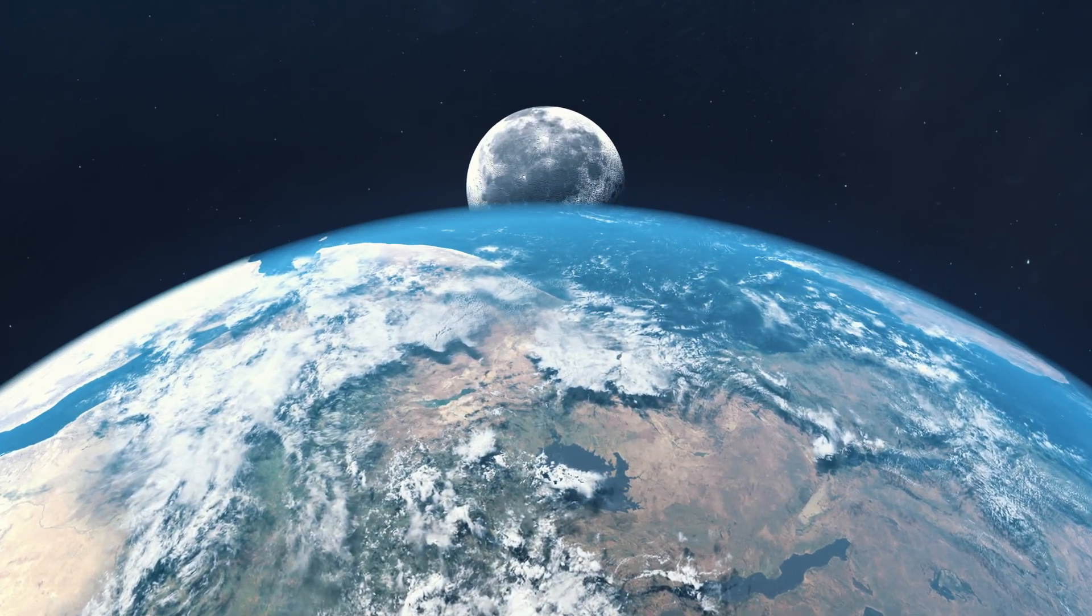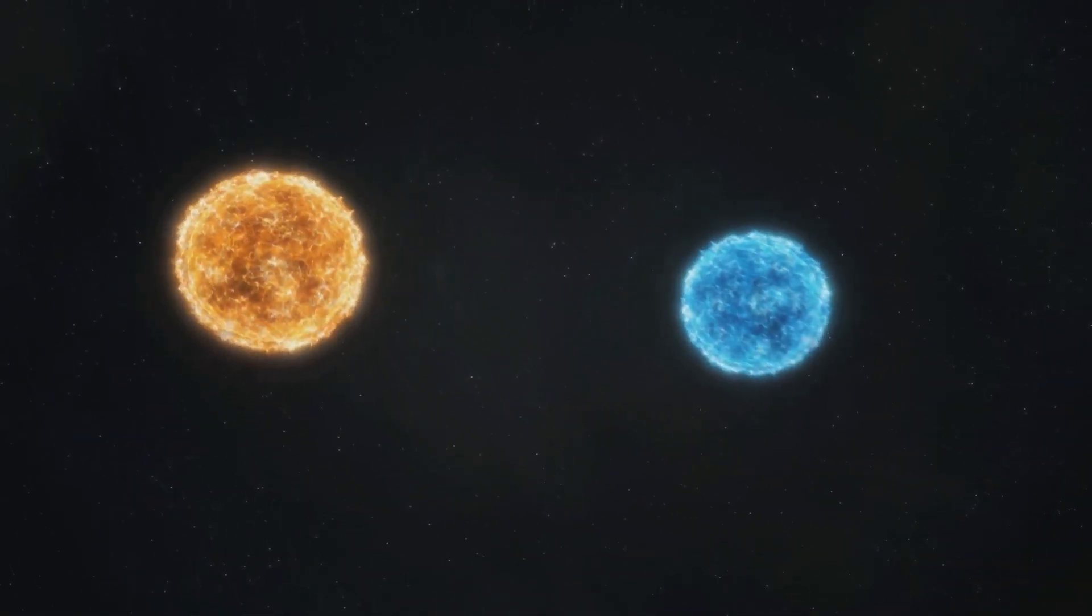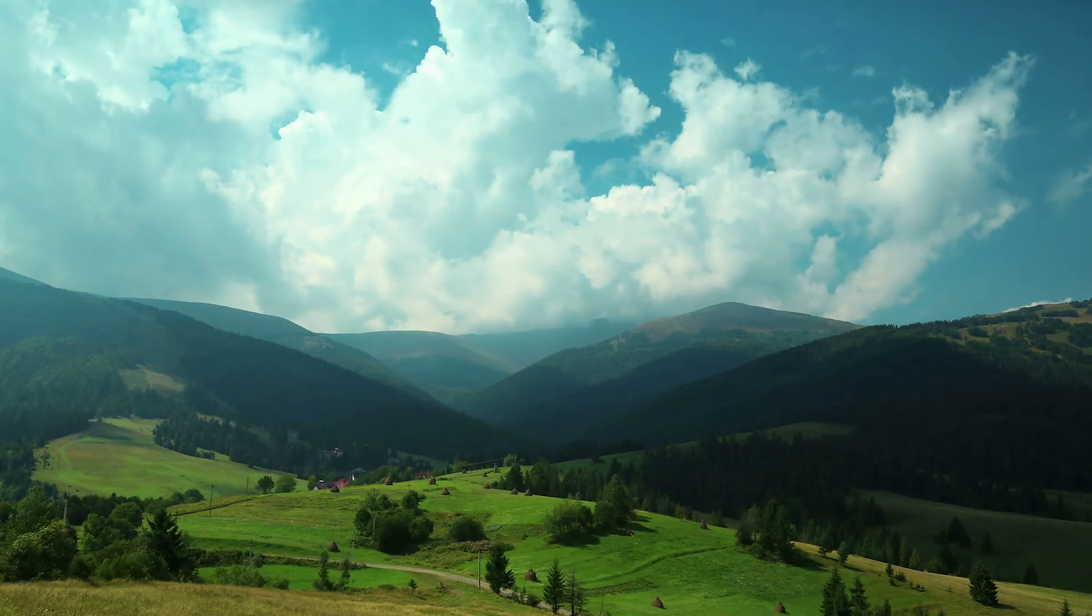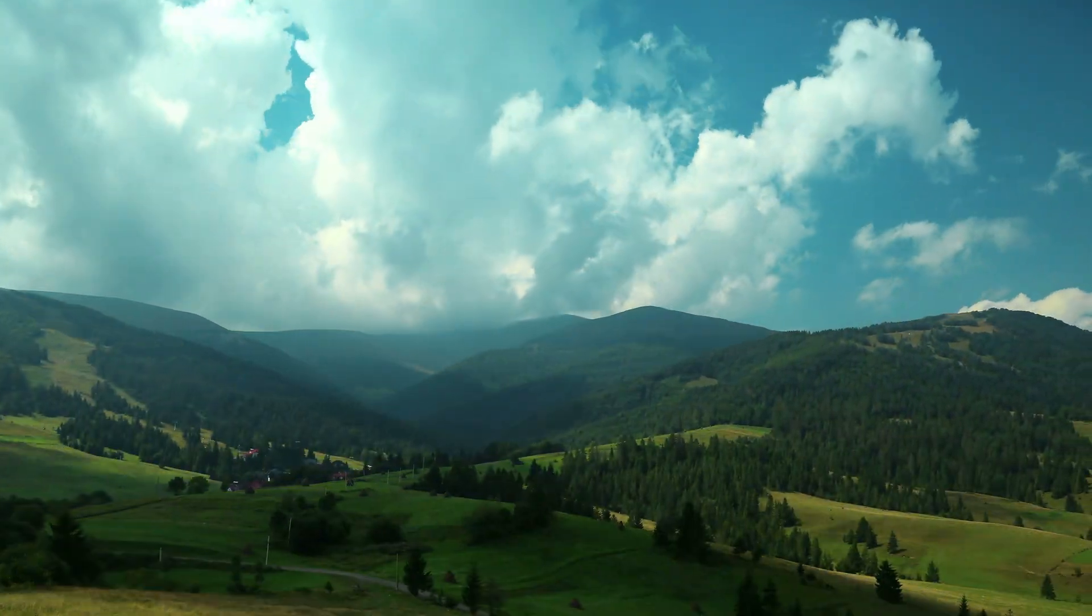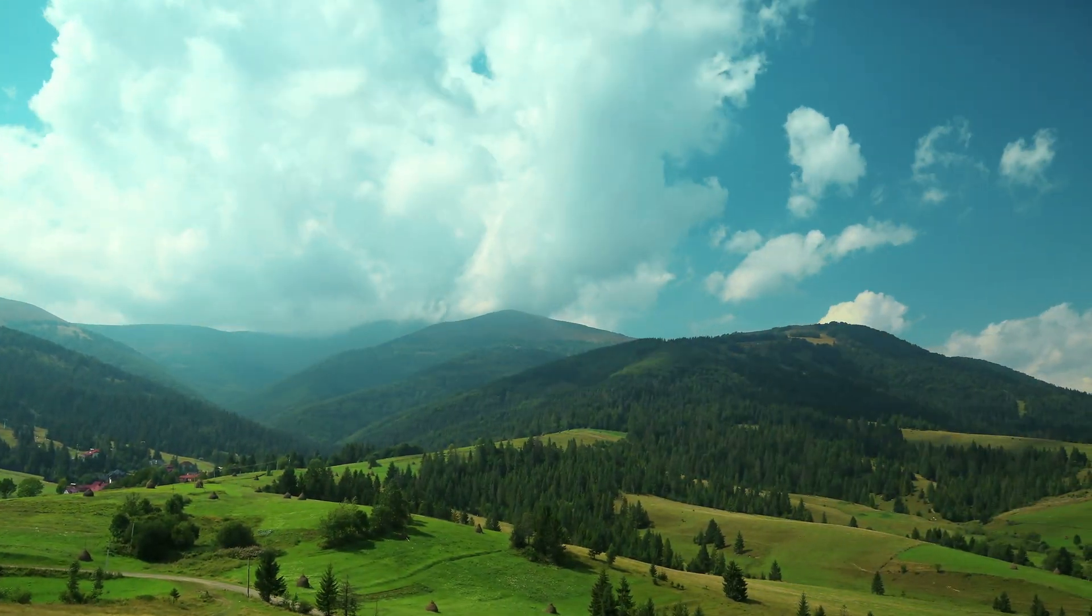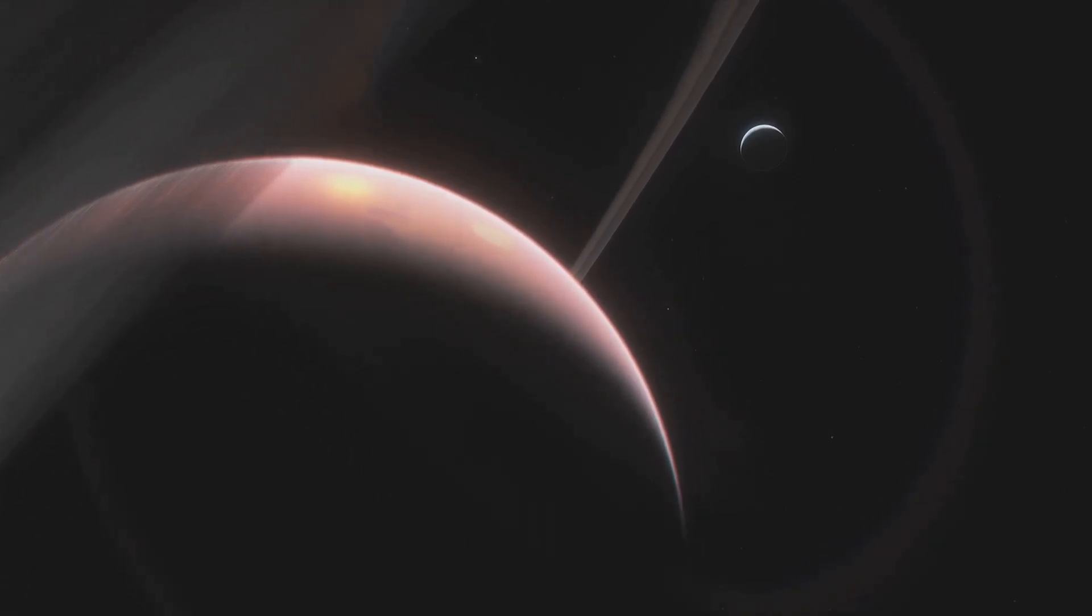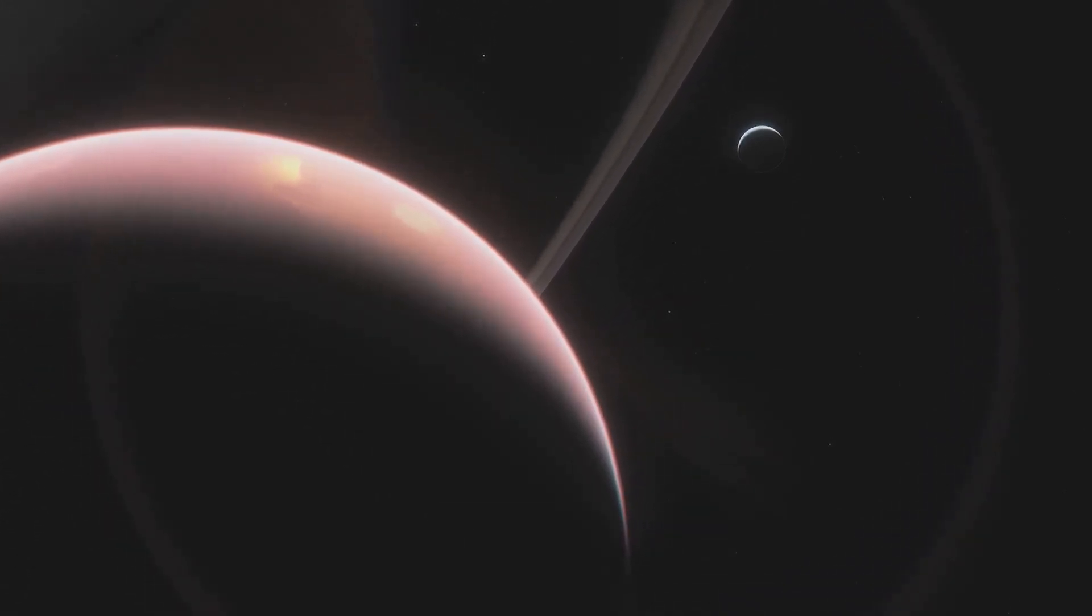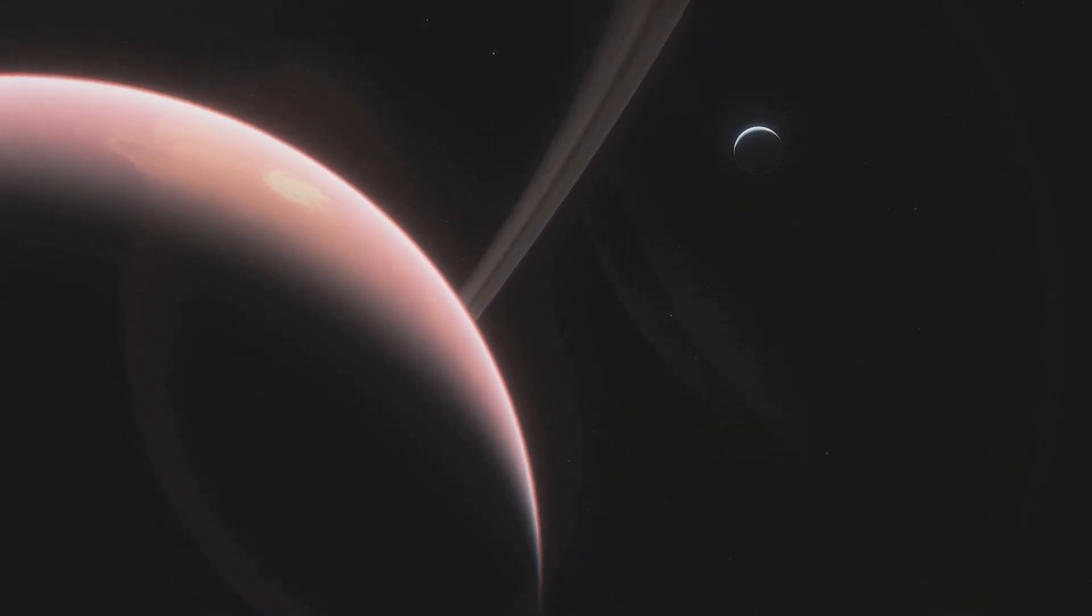We also need to consider the exoplanet's host star, Alpha Centauri. It's a binary star system, meaning it has two stars. This could potentially have a significant effect on the exoplanet's climate and seasons, making them drastically different from Earth's. These unique characteristics, from its proximity to Earth, size and potential habitability to its binary star system, all combine to make Alpha Centauri's exoplanet a captivating subject of study.